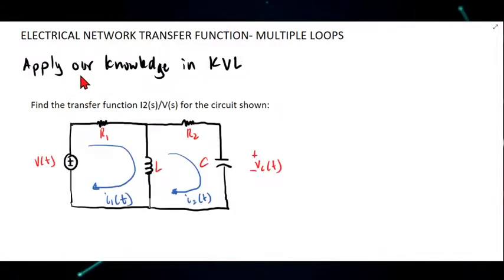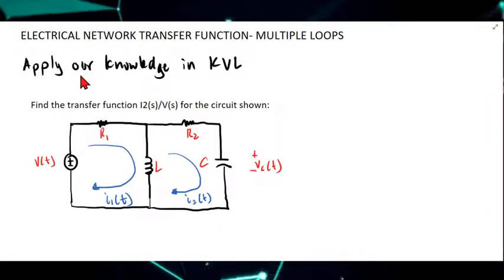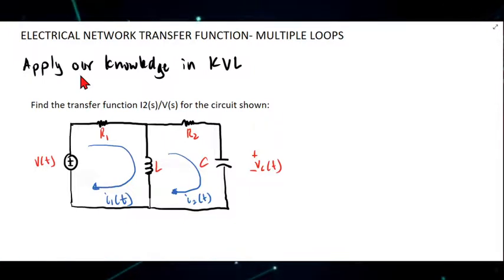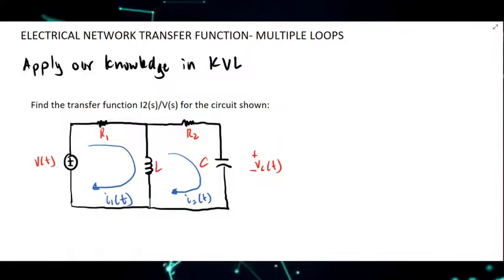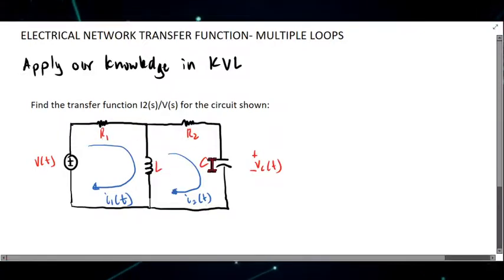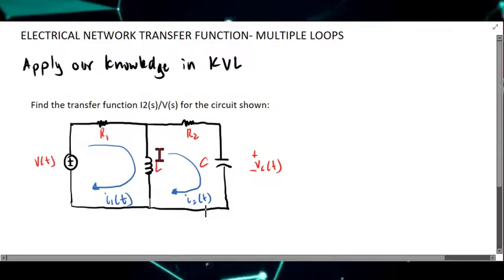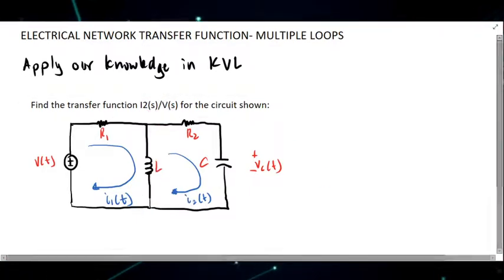So we have here the problem: Find the transfer function I2(S) over V(S) for the circuit shown. I have already drawn the circuit — we have here a circuit with two resistors, an inductor, and a capacitor. We have the source, and we need to find the transfer function in terms of I2(S) over V(S).